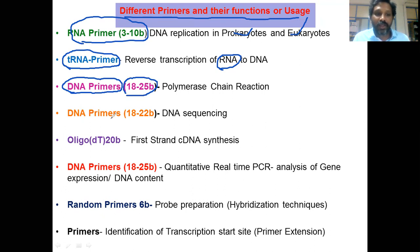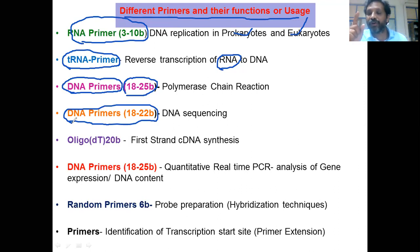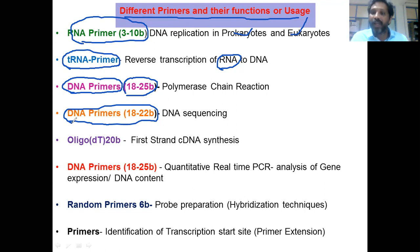DNA primers are also required for DNA sequencing. When you clone a DNA region of interest into a vector, that vector contains universal primers. Using those universal primers, you can sequence the cloned fragment.